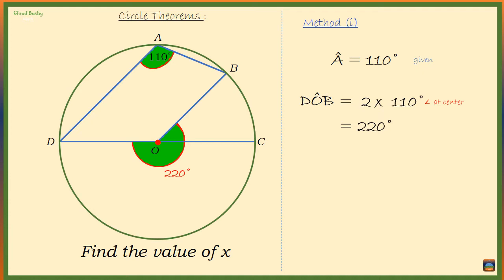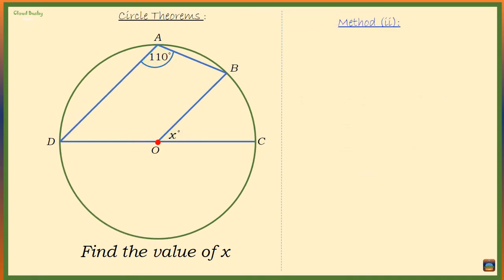Now this angle marked x is equal to 220 degrees minus 180 degrees. This is because this whole angle is 180 degrees because it's a straight angle. That means x is equal to 220 degrees minus 180 degrees, so x is equal to 40 degrees.